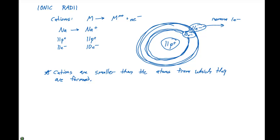than the atoms from which they are formed. So if we're losing electrons, the protons that remain in the nucleus can pull on those electrons a little bit stronger, and the ionic radii is going to be smaller for a cation as opposed to an atom.